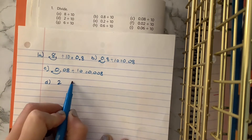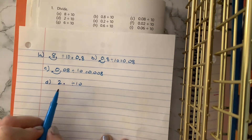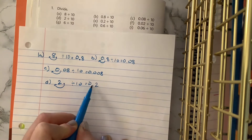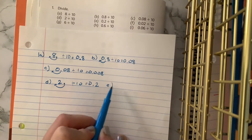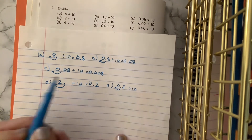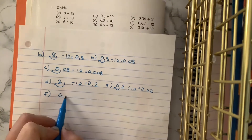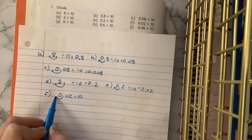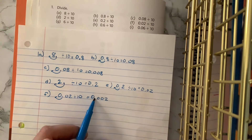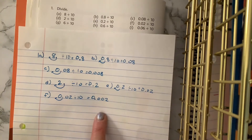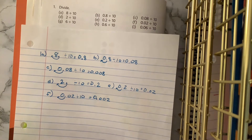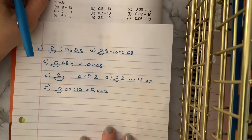So for D: 2 divided by 10 — remember we have to imagine there's a decimal point on the right side of the 2. Move it 1 to the left and you get 2 tenths. E: 2 tenths divided by 10 — go 1 space to the left to get 2 hundredths. F: 2 hundredths divided by 10 — 1 space to the left to get 2 thousandths. Check carefully and make sure you have your 2 in the correct place value, because that'll make all the difference for your answer. Now go ahead and pause and try G, H, and I.